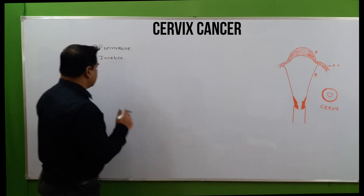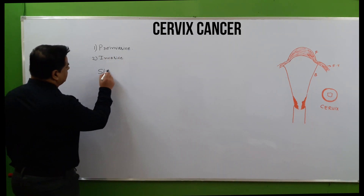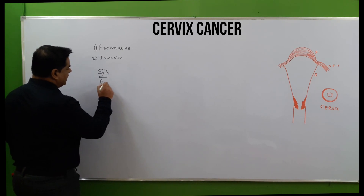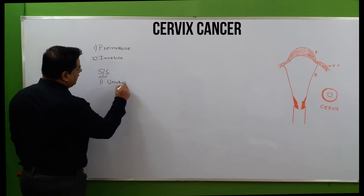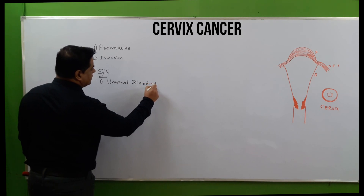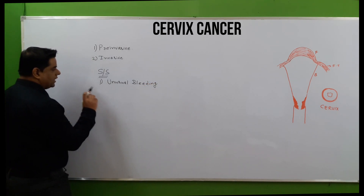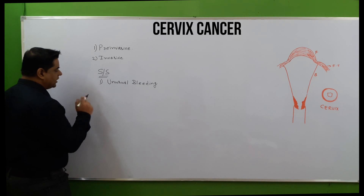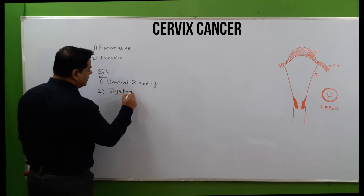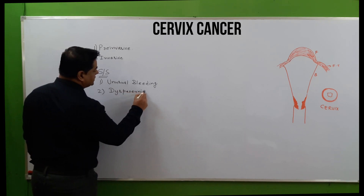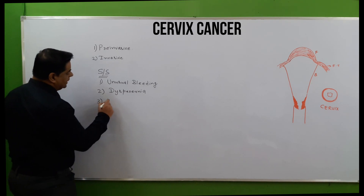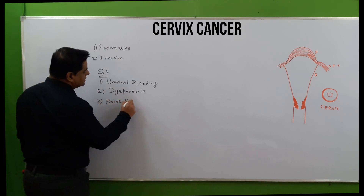The various signs and symptoms associated with cancer of the cervix include: first, unusual bleeding from the vagina — as mentioned in the cancer series, 'caution' stands for unusual bleeding. Second is dyspareunia, which is pain during sexual intercourse.